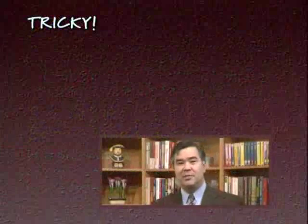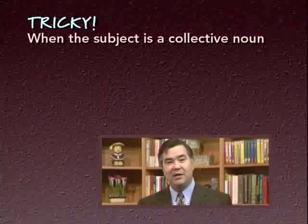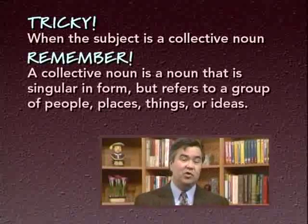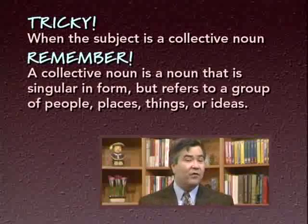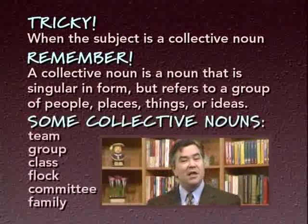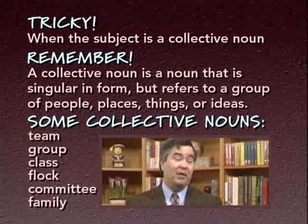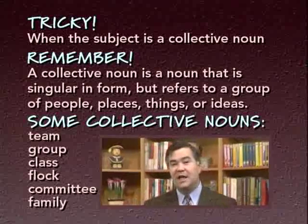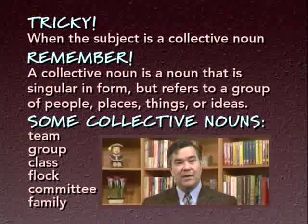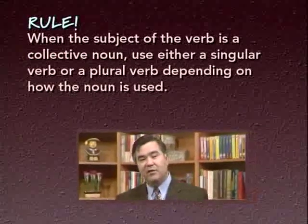Here's another tricky situation for subject-verb agreement. In some sentences, the subject of the verb is a collective noun. A collective noun is a noun that's singular in form — it usually doesn't end in S or ES — but which refers to a group of people, places, things, or ideas. Some examples of collective nouns are: team, group, class, flock, committee, family. In each of these cases, the word refers to a number of people gathered together under a single word. That's why we call these collective nouns.